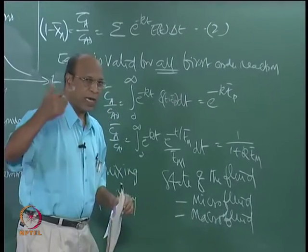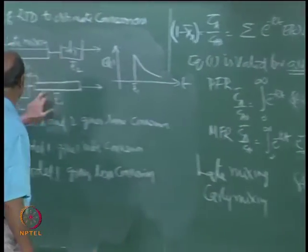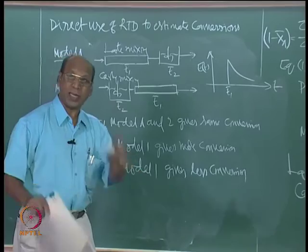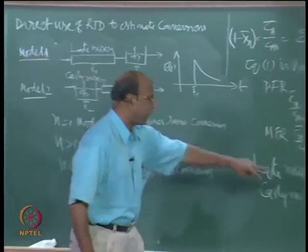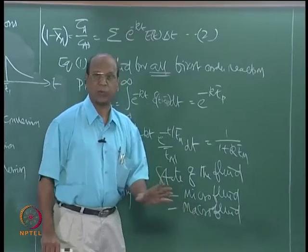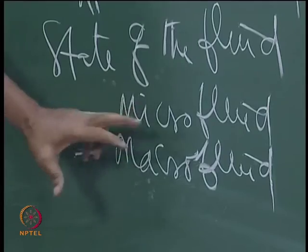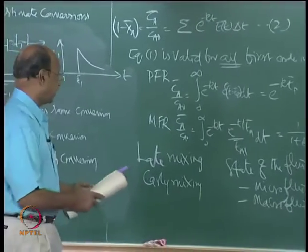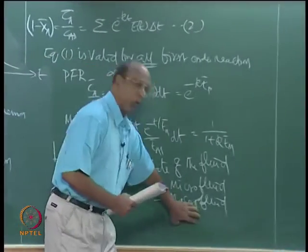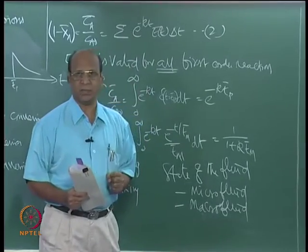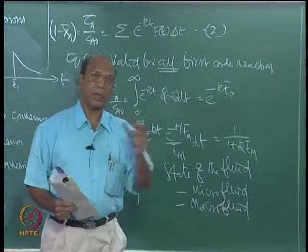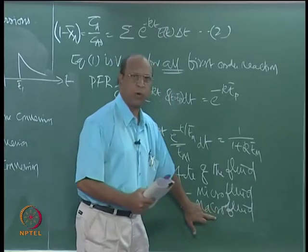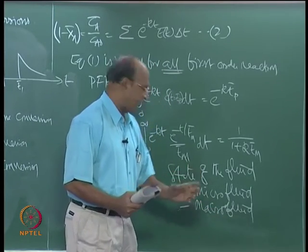Macro fluid will never mix. The latest mixing is never mixing. Macro fluid packets contain approximately 10¹² to 10¹⁸ molecules and move independently without contacting, coalescing, or breaking - retaining their own identity from entry to exit. Whatever conversion happens is exactly that happening inside that particular packet, which is equivalent to a batch reactor. Any reaction order may take place within that packet.